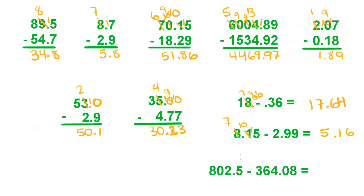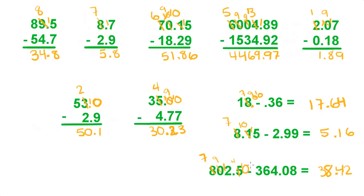Over here we have only one decimal place and now we have 2 decimal places, so we need to add an imaginary 0. So 0 minus 8 — we have to borrow from the 5. Make it a 4, make that a 10. 10 minus 8 is 2. 4 minus 0 is 4. Put the decimal point. We have 7 minus 4 — borrow from the 8. Make that a 7, make that a 9, and we can make that a 12. So 12 minus 4 is 8. 9 minus 6 is 3. And 7 minus 3 is 4.